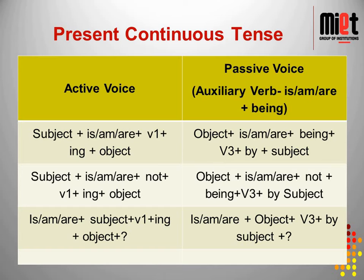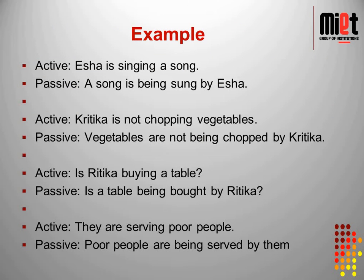For negative sentences in present continuous passive: object plus helping verb plus 'not' plus 'being' plus third form plus 'by' plus subject. For interrogative: 'is/am/are' plus object plus third form plus 'by' plus subject. Examples: 'Isha is singing a song' becomes 'A song is being sung by Isha'. 'Kritika is not chopping vegetables' becomes 'Vegetables are not being chopped by Kritika'. 'Is Hrithika buying a table?' becomes 'Is a table being bought by Hrithika?'